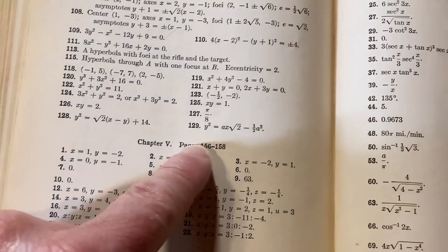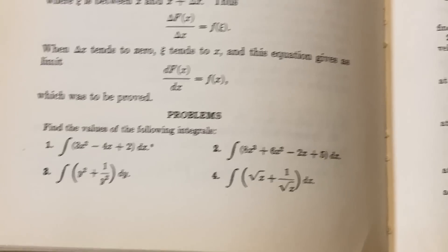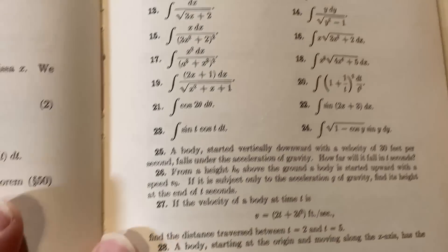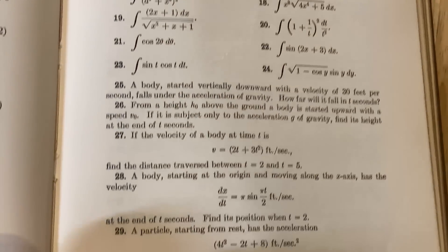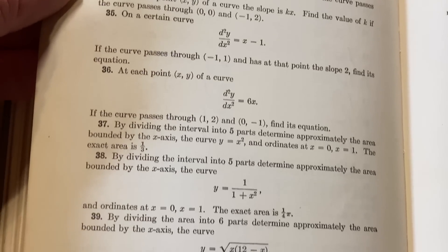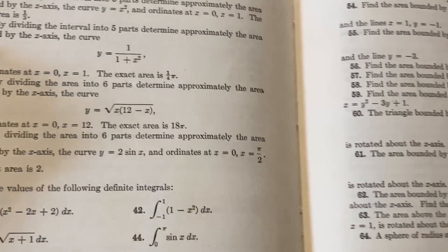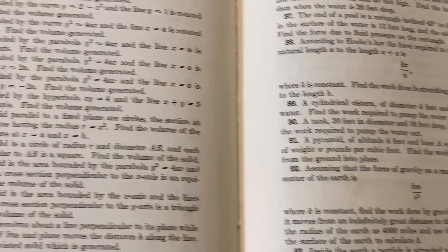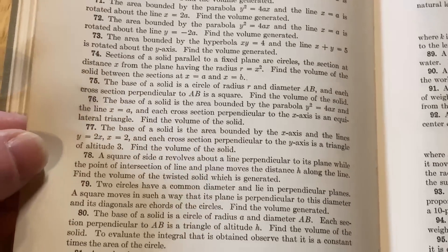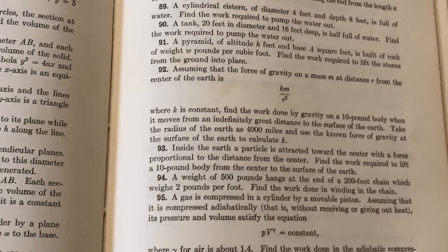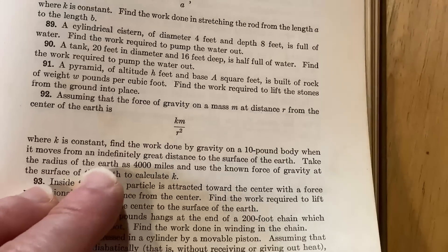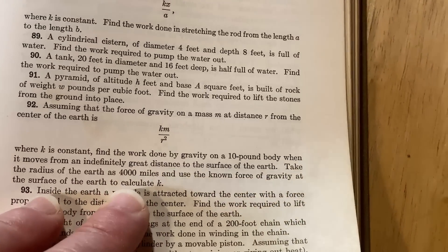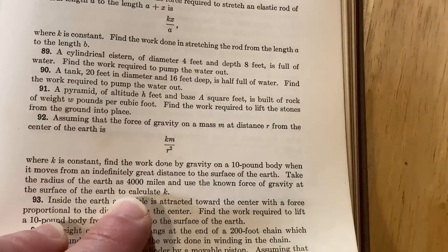Look at all of these exercises, 129. Insane. Here are some exercises on integration and they do get much harder. You're going to find problems in this book that are significantly more challenging than in other books. Most of these integrals are pretty easy, but it gets harder when you get to the conceptual problems. Like over here, you have some conceptual problems that can be a little bit more difficult and typically stump people. And H.B. Phillips does a lot of conceptual stuff. What's this one? Assuming that the force of gravity on a mass M at a distance R from the center of the earth is that, where K is a constant. Find the work done by gravity on a 10-pound body when it moves from an indefinitely great distance to the surface of the earth. Wow.